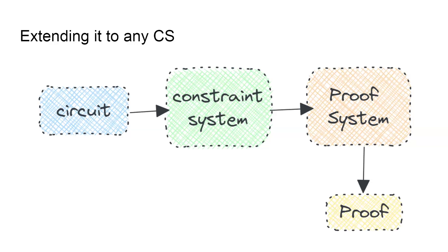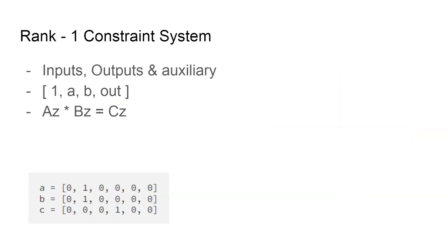A very familiar constraint system for all the fellows here would be R1CS. In a rank one constraint system, we specify the inputs, outputs, and auxiliary variables — or signals — in a rank one matrix with just one row. The R1CS constraints satisfy the equation A dot product B equals C. In layman's terms, left hand side multiplied by right hand side has to equal the output. This is a simple constraint system with not too many jargons, and it has been standardized since 2016.